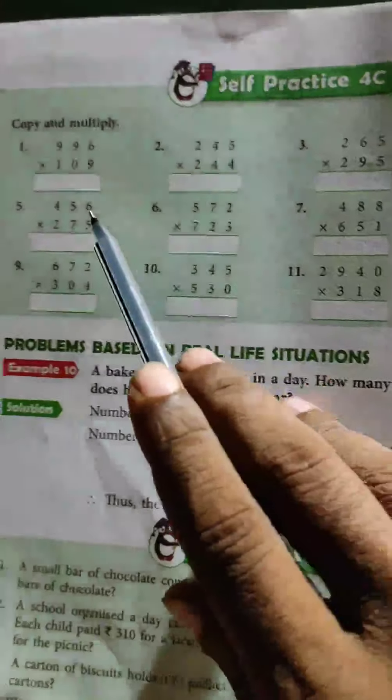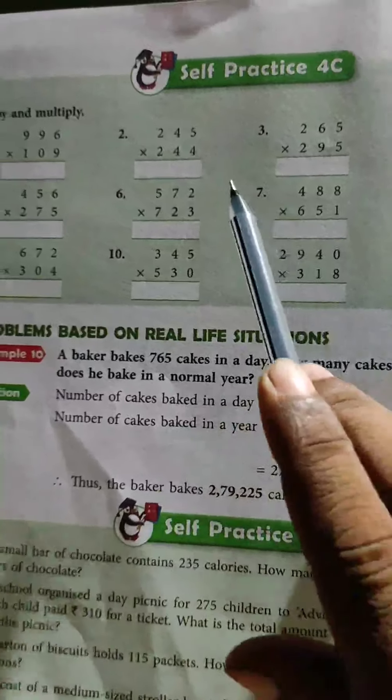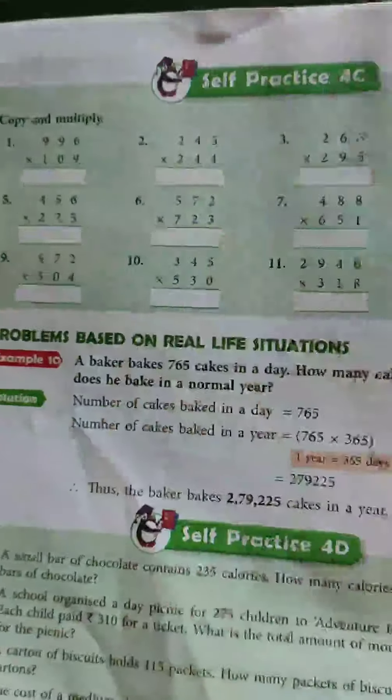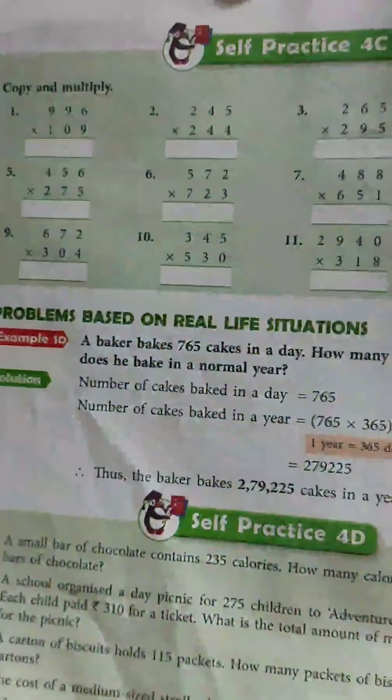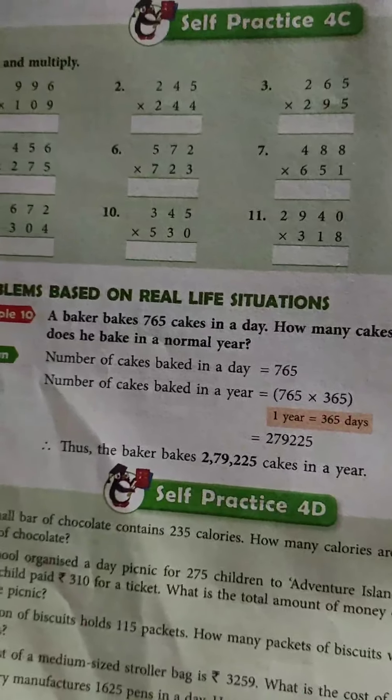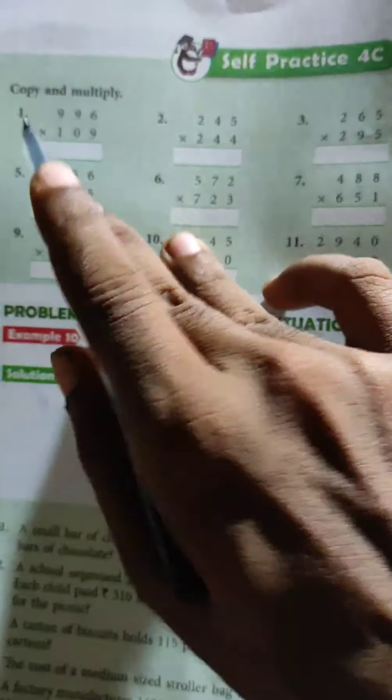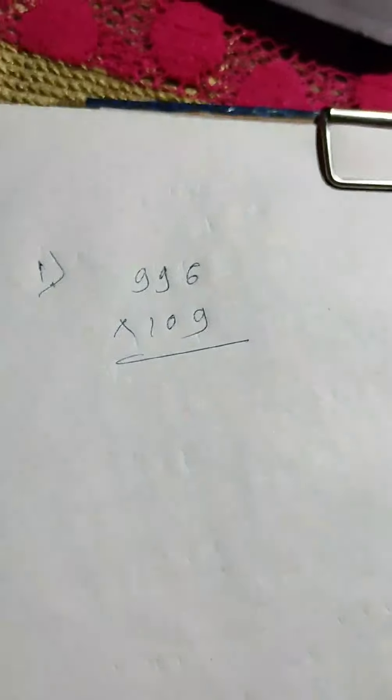Abhi aapko kuch problem nayi aayegi — abhi easy tarike se change karke solve karo. Main aapko kuch examples solve karke batane wala hoon. Toh sabse pehle hum start karte hain first. First, write it down. First we have 996 multiplied by 109. I have told you two methods — you can use any method.